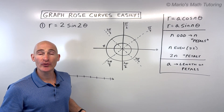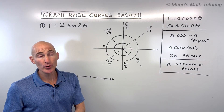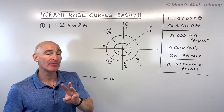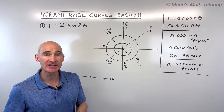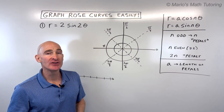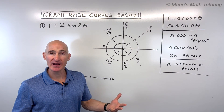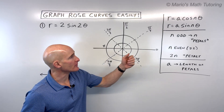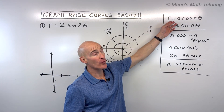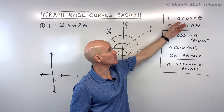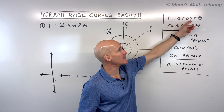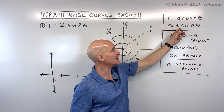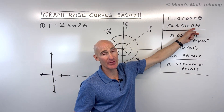In this video, you're going to learn how to graph rose curves easily, and we're going to go through three examples together. So let's dive in. The first thing you want to do is recognize when you're dealing with a rose curve, and that's when the equation is in the form r equals a times cosine n theta, or r equals a times sine n theta.